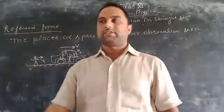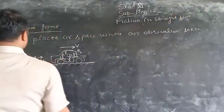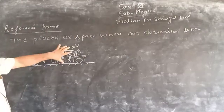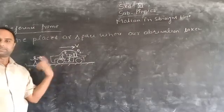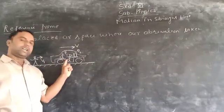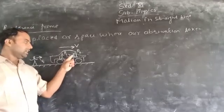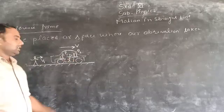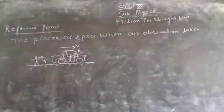The reference frame is where our observation is to be done. If this observer is simply standing or walking here and sees this car, then the ground is our reference frame. But if the observer is running in the car and sees the other person sitting on the chair, then the car is also called the reference frame.